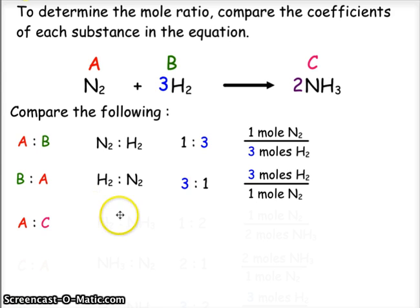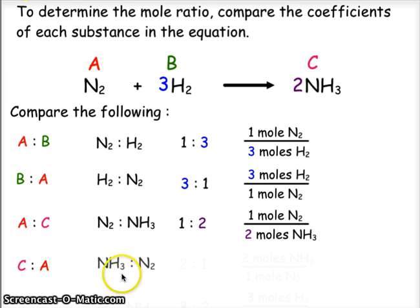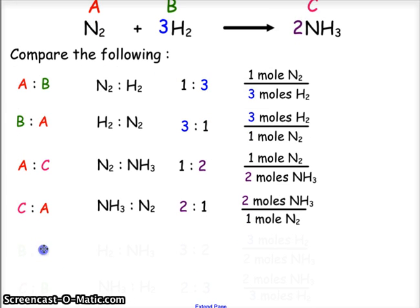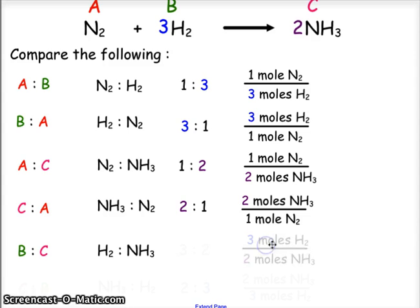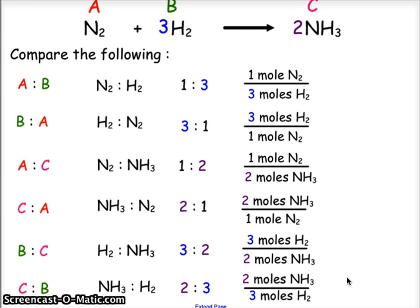Comparing A to C — nitrogen to ammonia — gives a one-to-two ratio, with a conversion factor of one mole of nitrogen for every two moles of ammonia. Comparing C to A — ammonia to nitrogen — gives a two-to-one ratio. Comparing B to C — hydrogen to ammonia — gives a three-to-two ratio, three moles of hydrogen for every two moles of ammonia. And C to B — ammonia to hydrogen — gives a two-to-three ratio, a conversion factor of two to three.